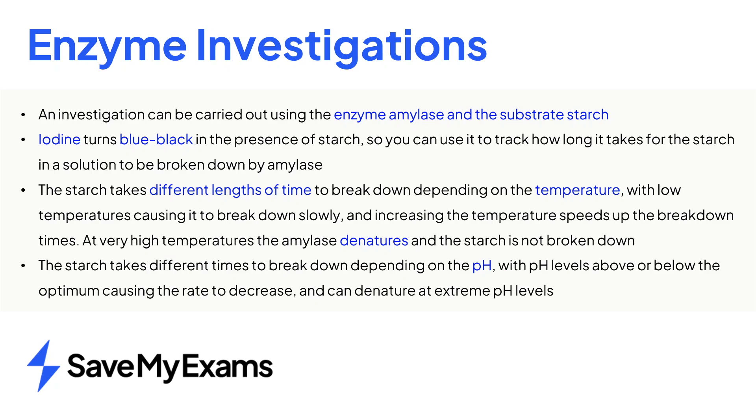How amylase is affected by pH can also be investigated with pH values above and below the optimum causing the speed of the starch breakdown to be lower. And in some cases, the starch is not broken down at all because the amylase is denatured.